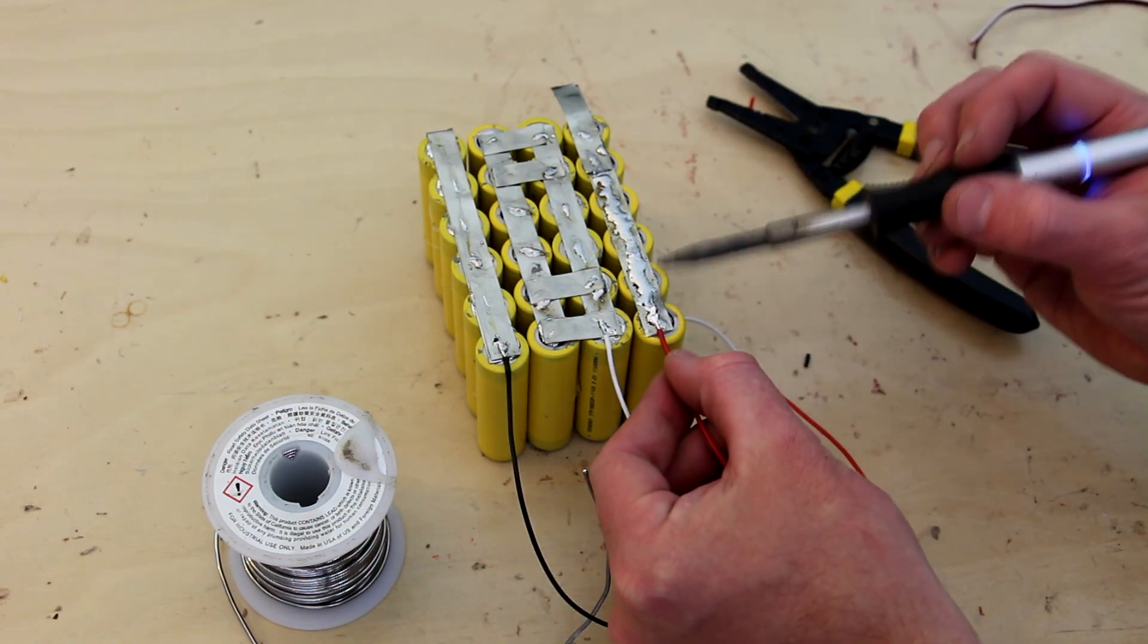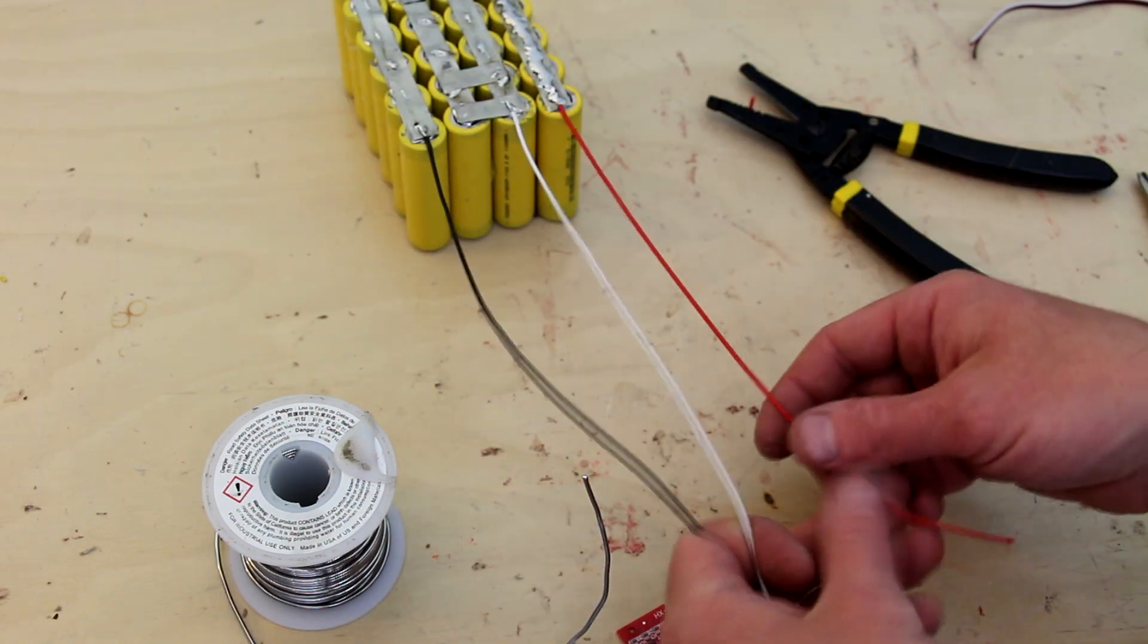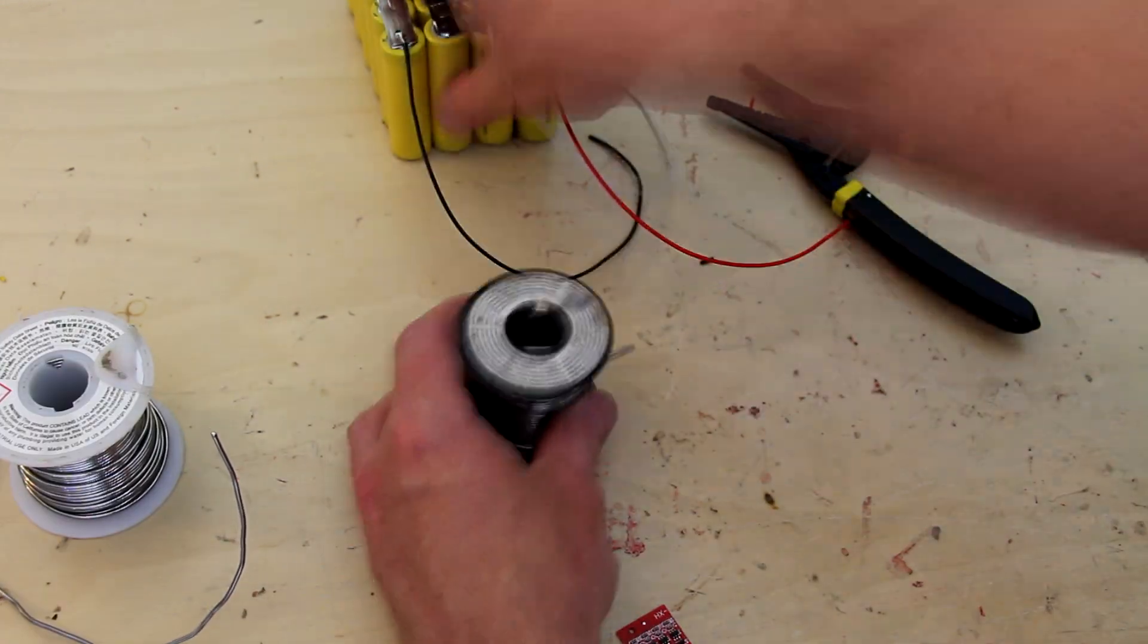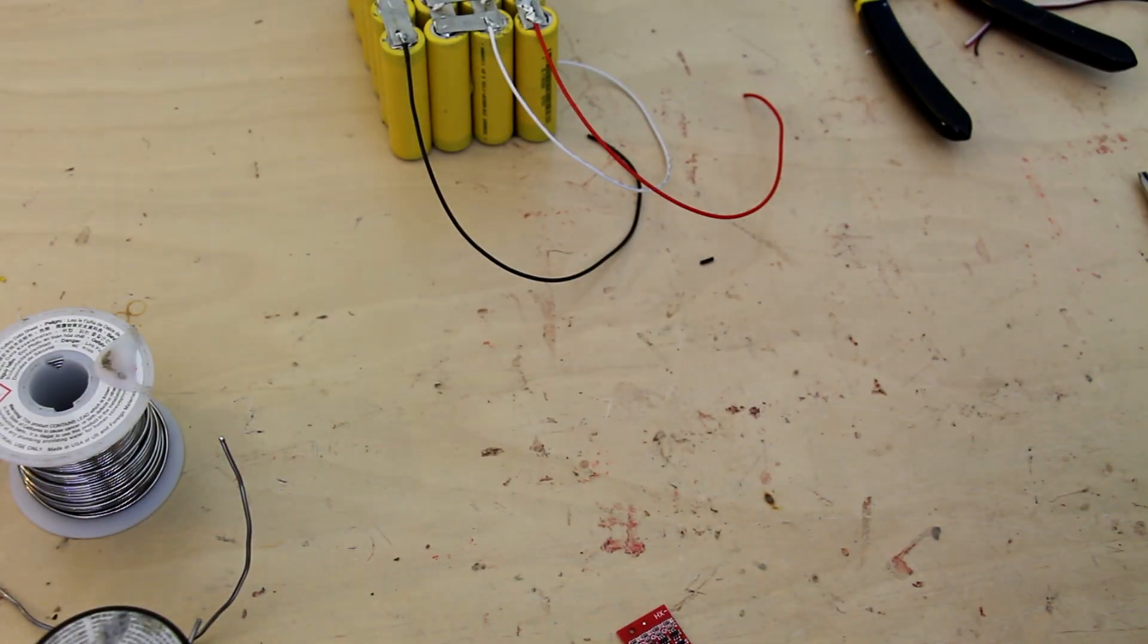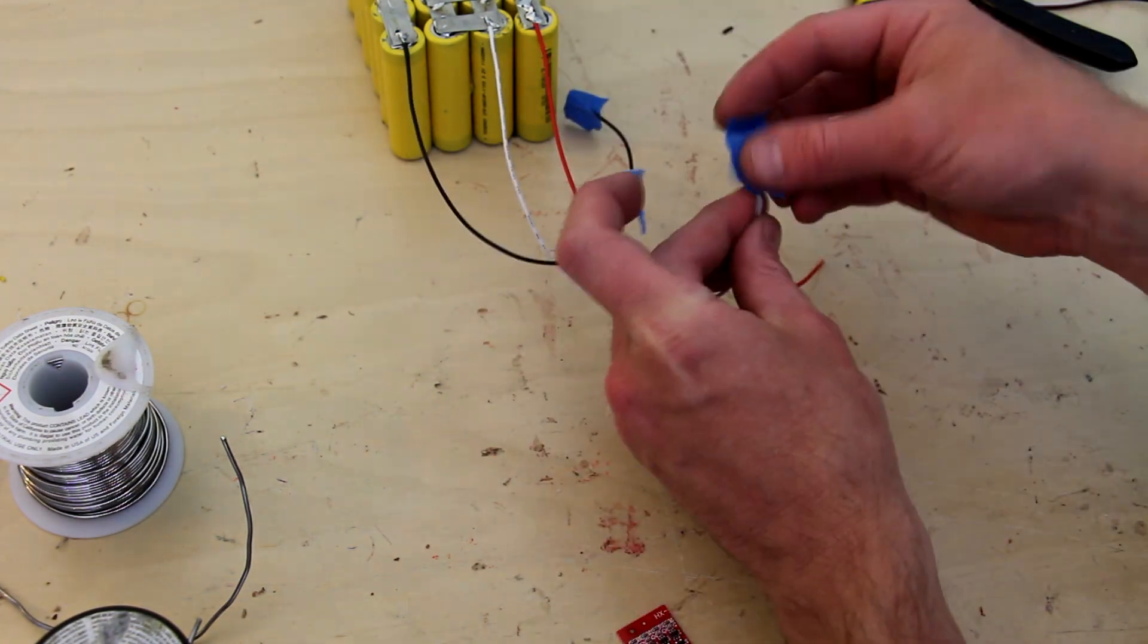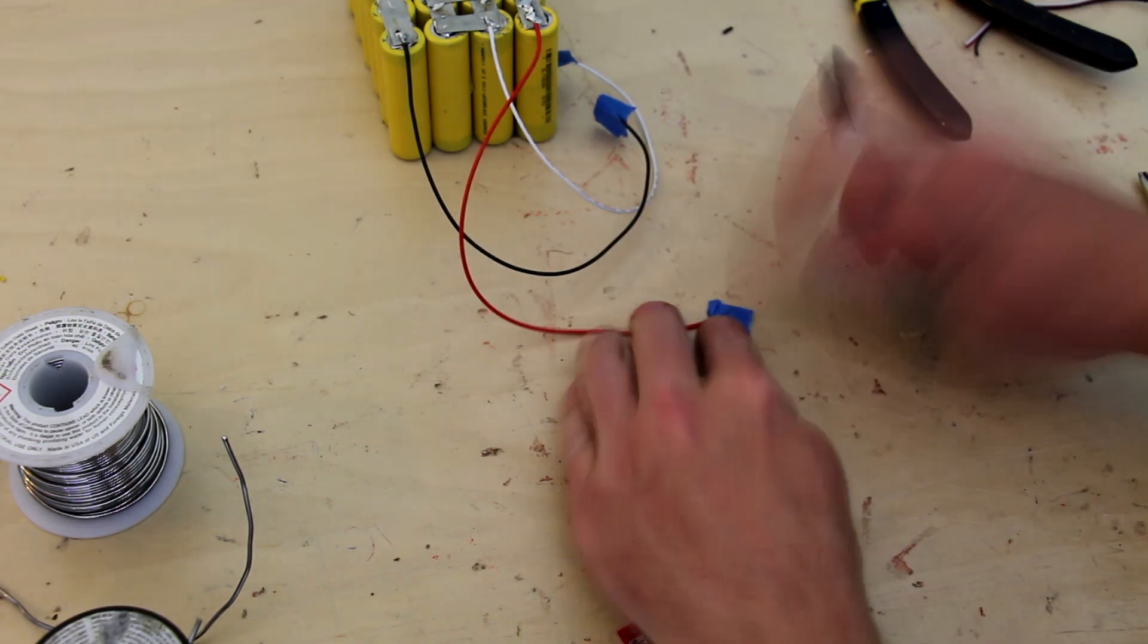To connect my BMS I'm simply using 22 gauge wire connected to each set of batteries on each side. The negative lead, that is my black lead, is going to go to B- on my battery balancer. You'll see that I'm adding tape here and then I'm labeling them with each place the wires will go.